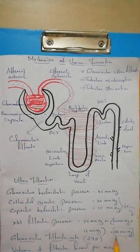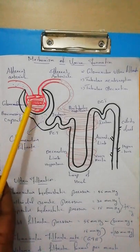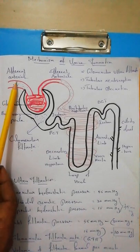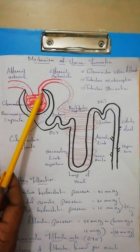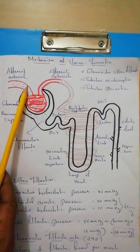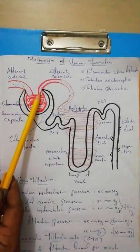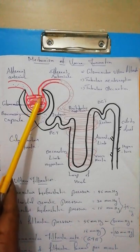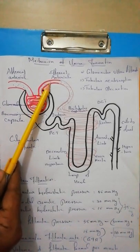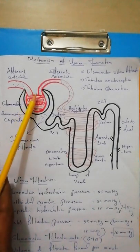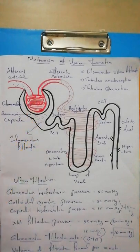Another reason for filtration is the difference in vessel diameter. The afferent arteriole is wider, so blood enters with great force. The efferent arteriole is narrower, causing blood to move more slowly and increasing pressure within the glomerulus. This also contributes to the formation of glomerular filtrate.